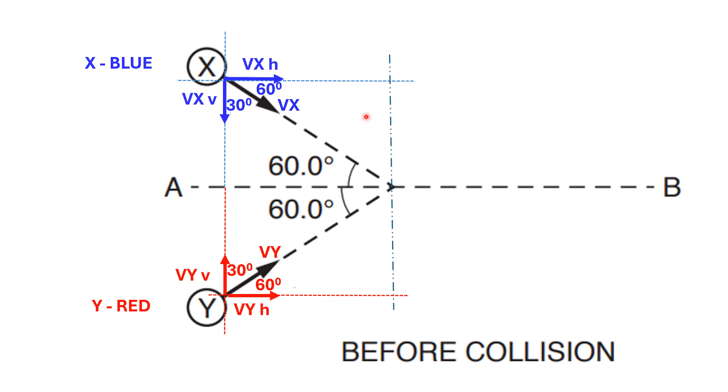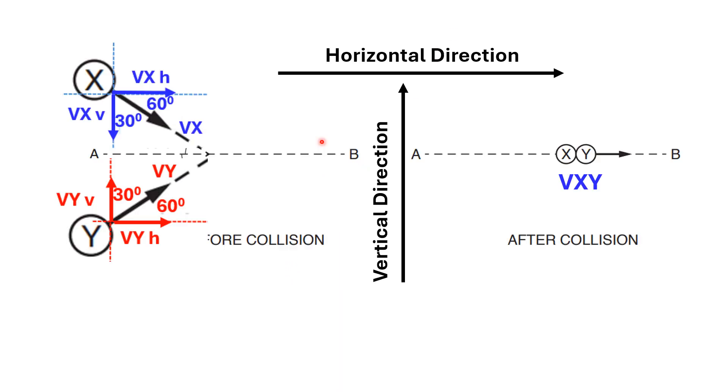Next, draw arrows to identify the components for the velocity of the ball X, which is Vx, and for the velocity of the ball Y, which is Vy. VxH is the horizontal component of Vx, and VxV is the vertical component of Vx. Likewise, VyH is the horizontal component of Vy, and VyV is the vertical component of the velocity of the Y ball, which is Vy. Wasn't that hard, right? Now, we have handy the components of Vx and Vy.